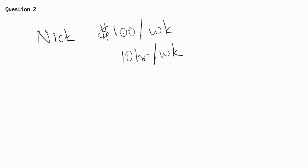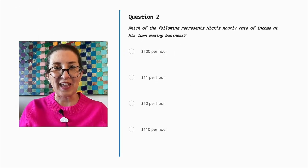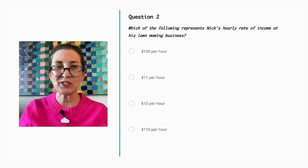Now we need to determine Nick's hourly rate of income. In order to do this, we will divide the amount of money he makes each week — $100 — by the number of hours he works each week — 10 — and that is equal to $10. Nick intends to make an hourly rate of $10.